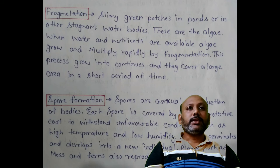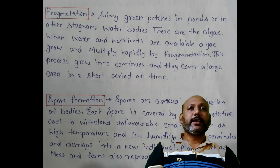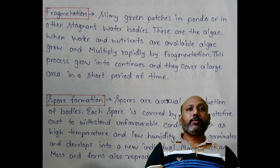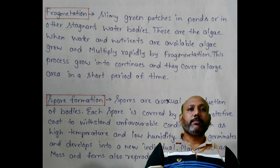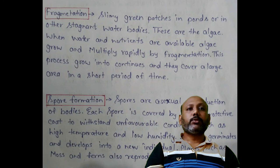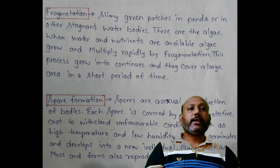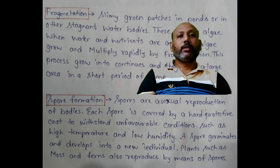Fragmentation: the slimly green patches seen in ponds or stagnant water bodies are algae. When water and nutrients are available, algae grow and multiply rapidly by fragmentation. This process continues and they cover a large area in a short period of time.